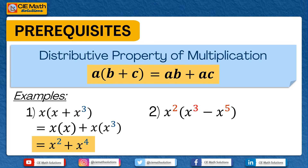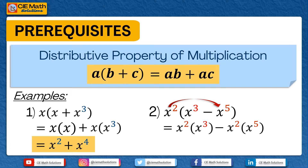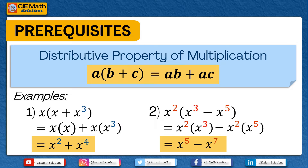If we have x squared multiplied by x cubed minus x raised to 5, we multiply x raised to 2 times x raised to 3 first, followed by x raised to 2 multiplied by x raised to 5, and we follow the subtraction operation. Simplifying: x raised to 2 times x raised to 3 equals x raised to 5, and x raised to 2 times x raised to 5 equals x raised to 7. Therefore, x squared times the quantity x cubed minus x raised to 5 equals x raised to 5 minus x raised to 7.